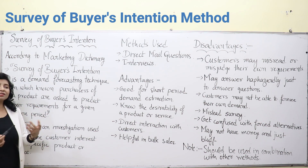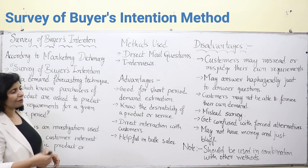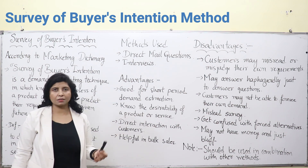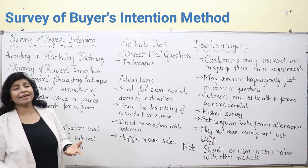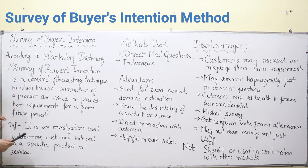Who can predict, foresee, or estimate their future demand? For example, if you ask me how many markers I will require in the next six months, I can tell you I may require four to five markers, because I can refill them with ink and use them. That is my demand estimation for myself. The requirements are for a given future period — that may be one month, two months, six months, or not more than one year — because this method is only used for short-term and not for long-term demand estimations.